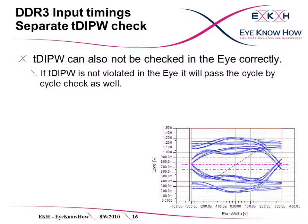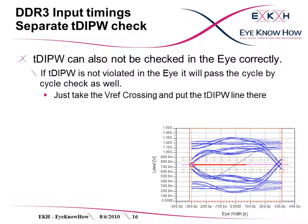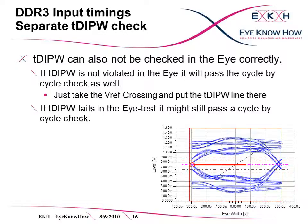Similar to TVAC, the data input pulse width also cannot be checked correctly in a data eye and needs a cycle-by-cycle check. Again, a simplified check is possible: take the VREF crossing and put the data input pulse width line there. If this test passes, a cycle-by-cycle test will pass as well. If this test fails, a cycle-by-cycle test can still pass.